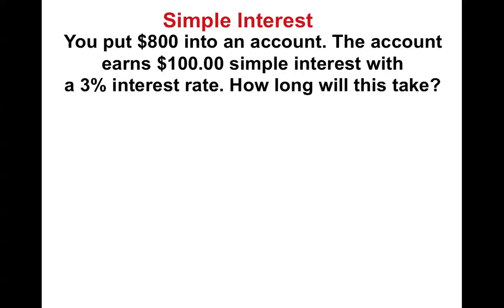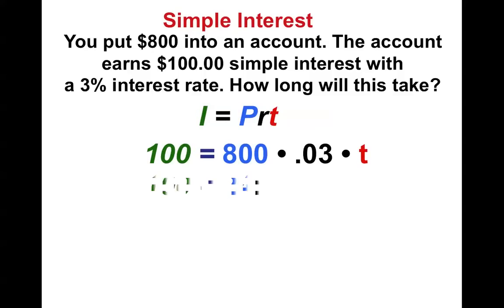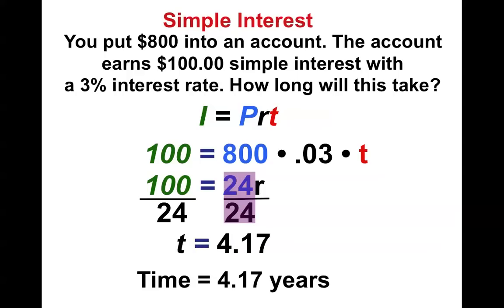Alright, try this one. It's our last one. Okay, I'm back. Did you put it in properly? With that said, we get 24, we divide by 24, and we get 4.17, which is 4.17 years.